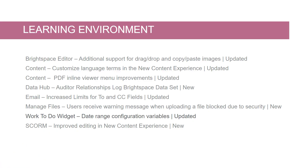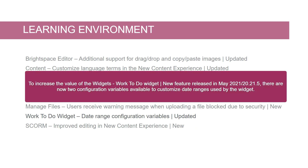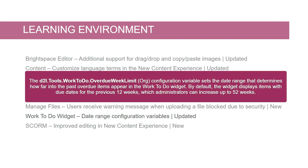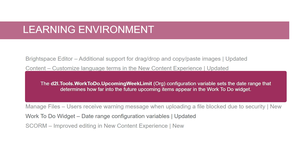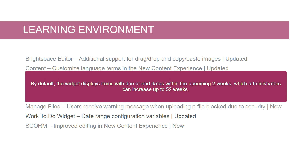Work To Do Widget: date range configuration variables, updated. To increase the value of the Work To Do widget — a new feature released in May 2021 (20.21.5) — there are now two configuration variables available to customize date ranges used by the widget. The D2L.tools.worktodo.overdueWeekLimit org configuration variable sets the date range that determines how far into the past overdue items appear in the Work To Do widget. By default, the widget displays items with due dates for the previous 12 weeks, which administrators can increase up to 52 weeks. To set these configuration variables, administrators require the Can See/Edit Config Variable Values permission.